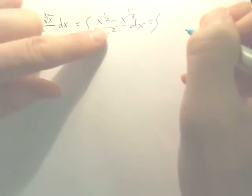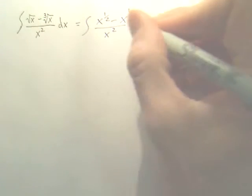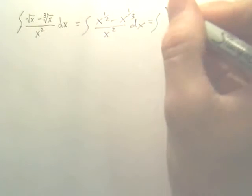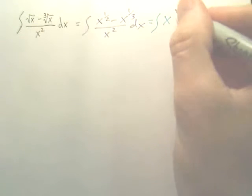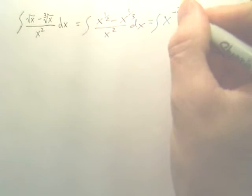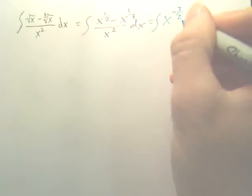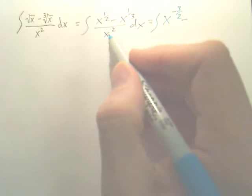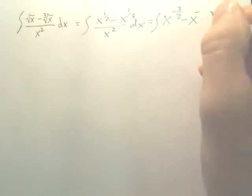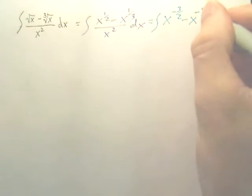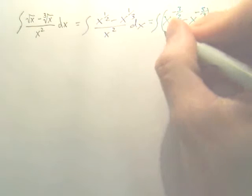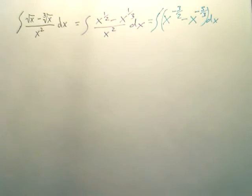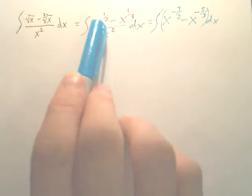Now, we're going to divide each piece by X squared. So X to the 1 half divided by X squared is going to be X to the negative 3 over 2, minus X to the 1 third divided by X squared, which gives X to the negative 5 thirds. DX. You divided both pieces by X squared.